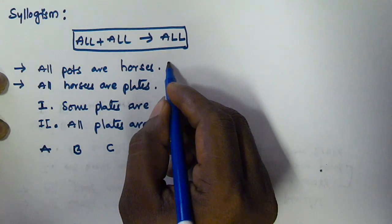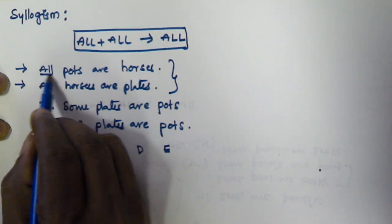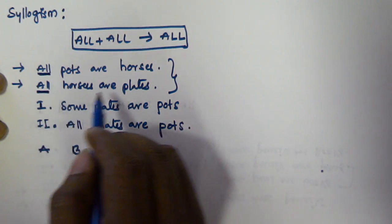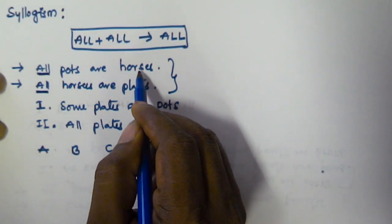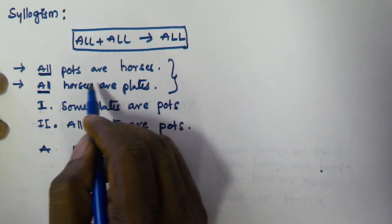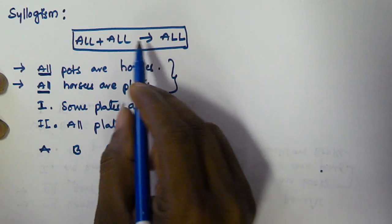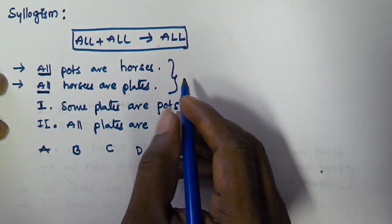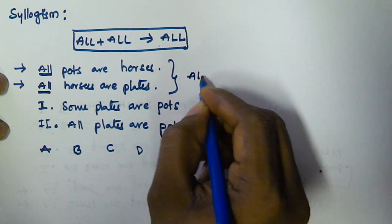From the given two syllogisms, the first one starts with 'all' and the second syllogism also starts with 'all.' The predicate of the first syllogism is equal to the subject of the second syllogism. So by using the All plus All is equal to All rule, the conclusion is also going to start with 'all.'